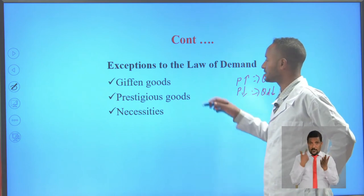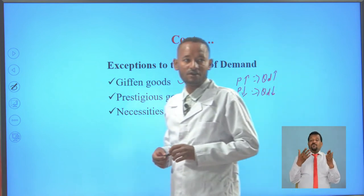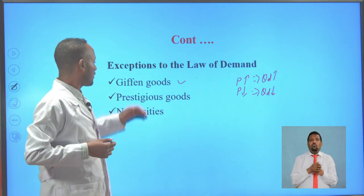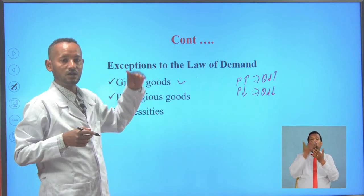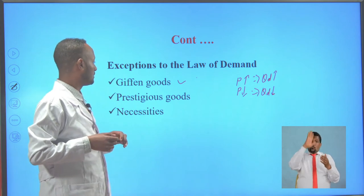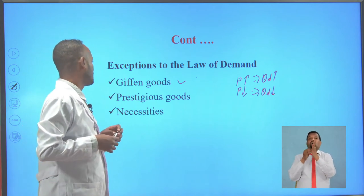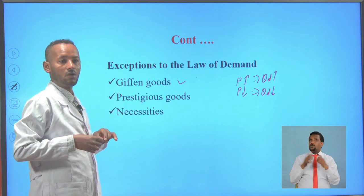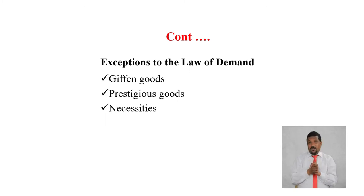One exception is Giffen goods, which are a special type of inferior goods. Inferior goods are those for which, as income of a consumer increases, demand declines, and with a fall in income, demand also declines. Giffen goods are against the law of demand — with an increase in the price of Giffen goods, quantity demanded may increase or remain unchanged.